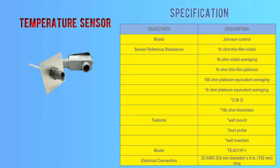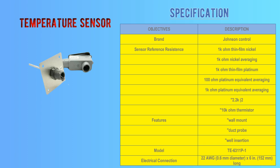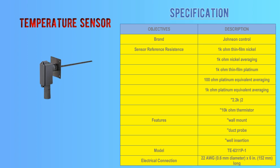Now take a look at some of the field devices which are commonly used in any project, such as a temperature sensor. On the right side you can see the specifications of the field device. This is a product of Johnson Controls — an air temperature sensor. It is used for sensing the temperature inside the duct, outside temperature, and it can also be wall-mounted. There are many types of sensor resistance available in the market such as nickel, platinum, thermistor, and NTC. 22 AWG wire is acceptable as per standard protocol.